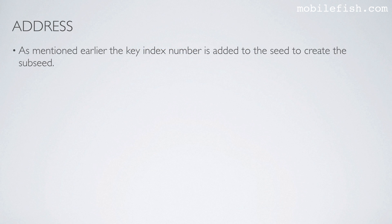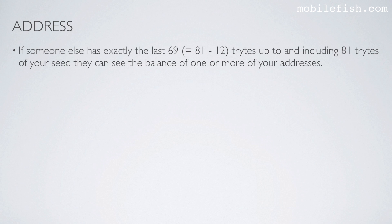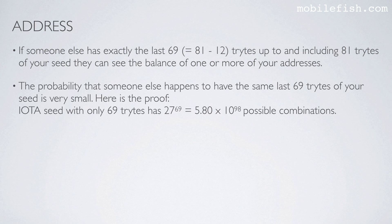The key index number is added to the seed to create the sub-seed. The seed and sub-seed can differ between the first trite up to and including 12 trites. If someone else has exactly the last 69 trites up to and including 81 trites of your seed, they can see the balance of one or more of your addresses. The probability is very small: an IOTA seed with only 69 trites has 27 to the power of 69, which equals 5.8 times 10 to the power of 98 possible combinations.